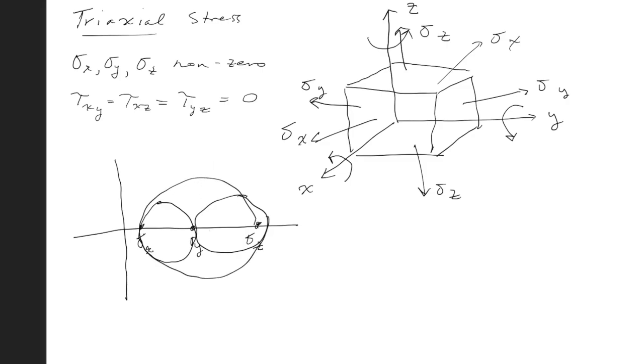So the big circle corresponds to rotating the cube about the y-axis because it involves sigma x and sigma z. This circle here on the left corresponds to a rotation about the z-axis. And then the small circle on the right corresponds to a rotation about the x-axis.